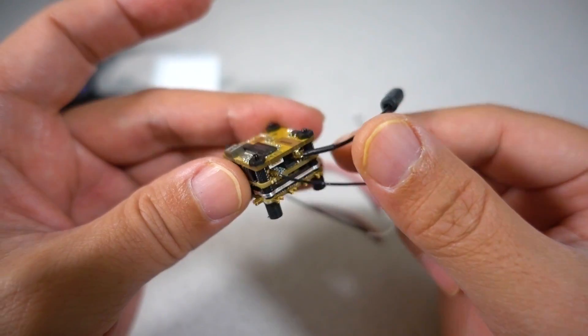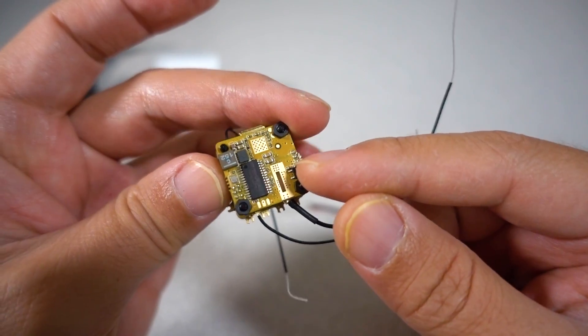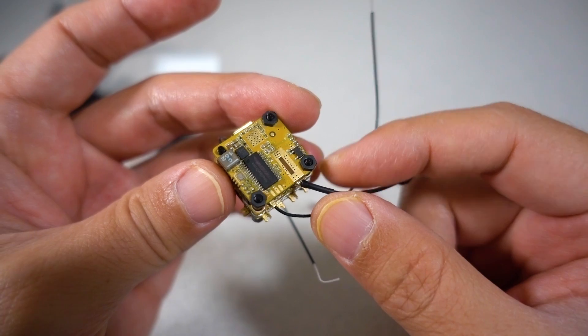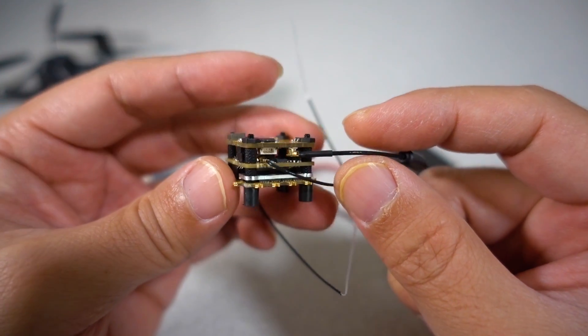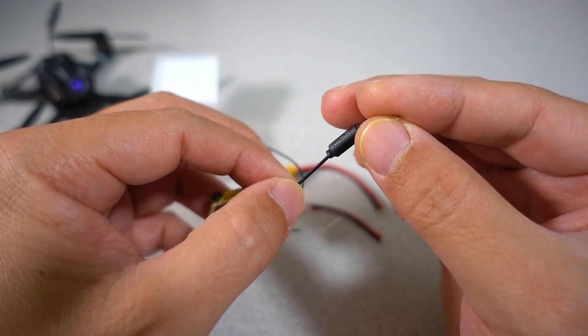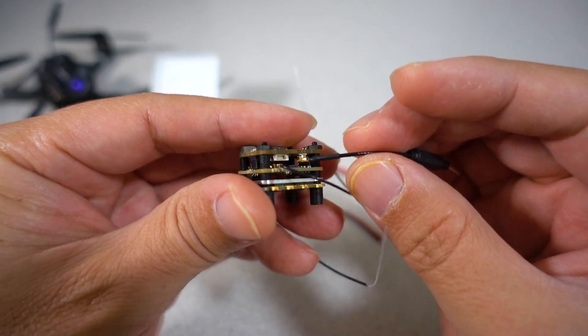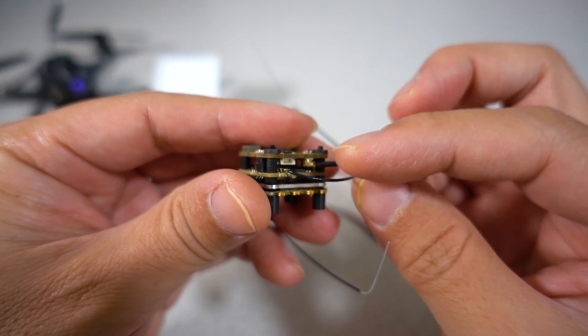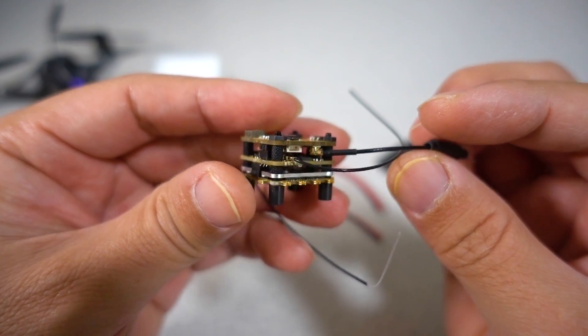And the top board here is going to be your OSD, plus your video transmitter, which is power switchable between 25 and 200 milliwatts, and comes with a little whip antenna here. But of course you could swap that out for circular polarizing antenna with a micro FL connector if you want to do that.